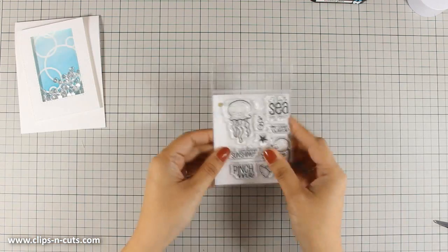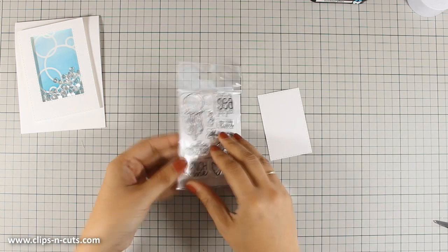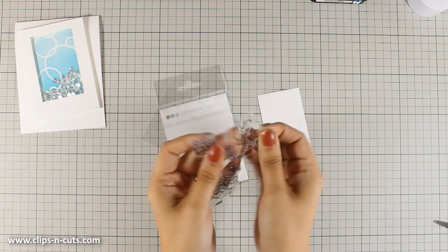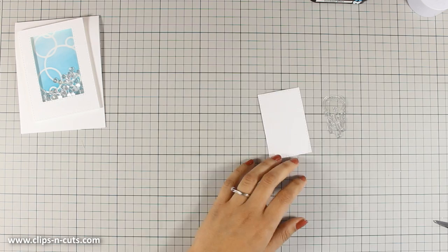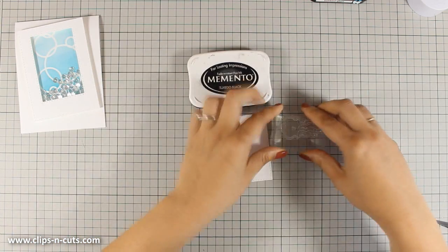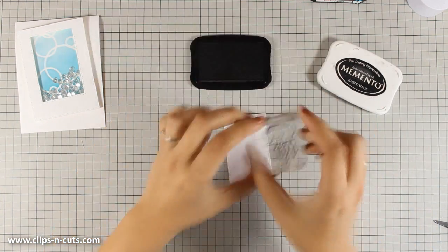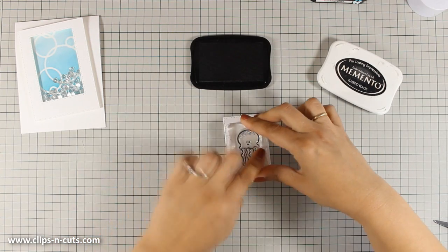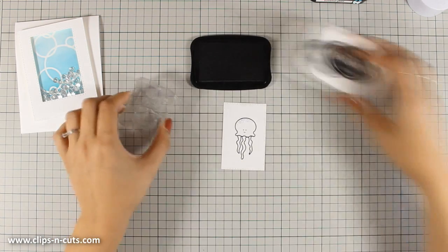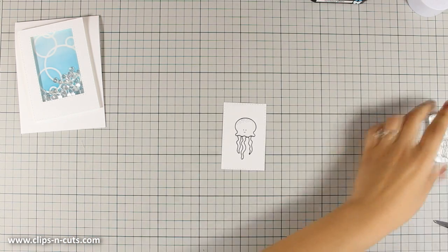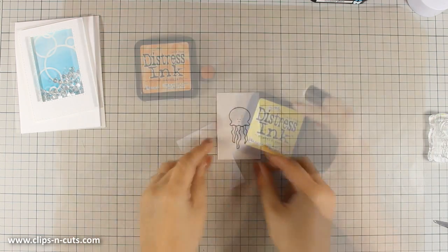For my focal point I am going to stamp this adorable jellyfish and I think that it is so cute just because it has a face with tiny little eyes and a smile. I am stamping it on a piece of white cardstock using Memento Tuxedo black ink and then I am going to use my distress inks to color it.